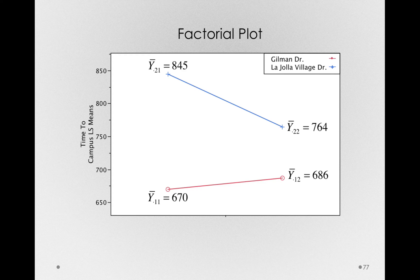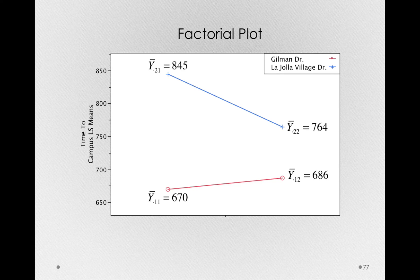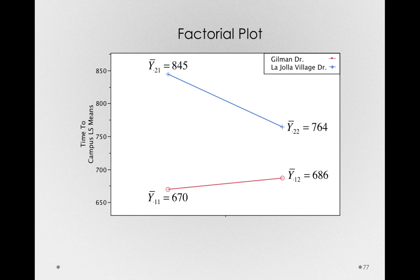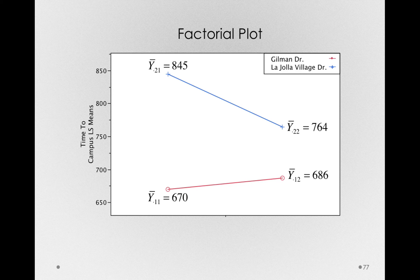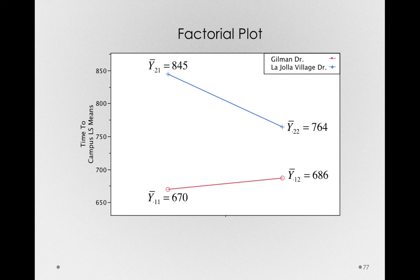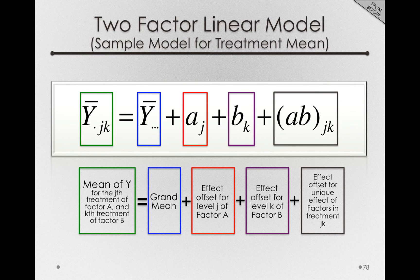For La Jolla Village Drive, the second level of our route is y bar dot two one at 845. And finally, at 9:30, y bar dot two two was 764 seconds. So these are the means that our two-factor linear model will decompose.